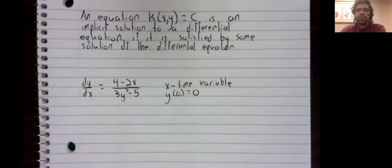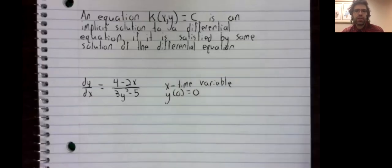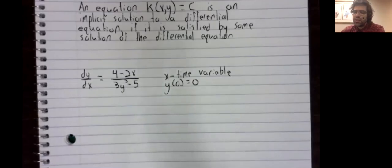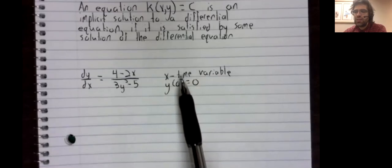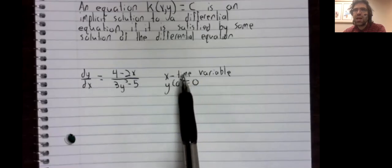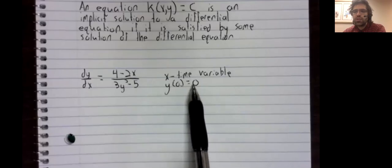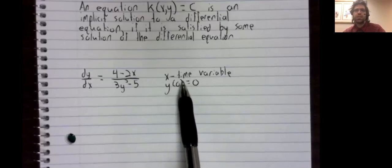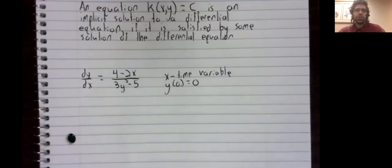Let's recall an example we did in a previous video and a previous set of notes. We did not, when we last did it, give any meaning to the variables. Let's talk about x as a time variable, and let's also put an initial condition here: y(0) = 0.